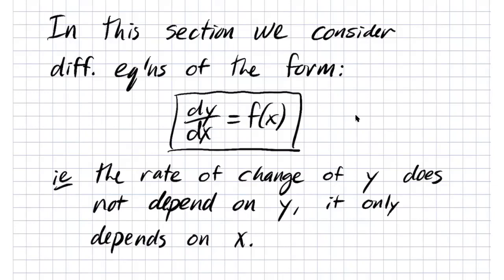We've already seen some examples like logistic growth, which is used to model contagious disease. That clearly depended on the percentage of the population that were infected — the rate of change of the percentage of people infected directly depends on the actual number of people infected. In this section we're considering differential equations that are not of that form; these only depend on x, or if you're modeling something changing with respect to time, the rate of change only depends on time, not the actual quantity.